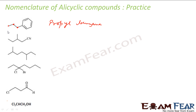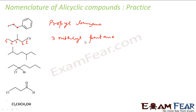Let's check this one. We have five carbons here, and this is a nitrile group. The functional group should get the least possible number, so we start numbering from here. At position three we have a methyl group — that is the prefix. We have five carbons, all single bonds, and a nitrile group: this is 3-methylpentanenitrile.